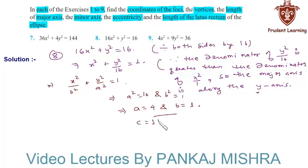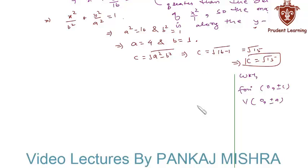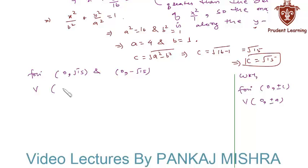Using the formula c = √(a² - b²), we have c = √(16 - 1) = √15. We know that the foci of this ellipse are at (0, ±c) and vertices are at (0, ±a). So in this question, foci are at (0, √15) and (0, -√15), and vertices are at (0, 4) and (0, -4).